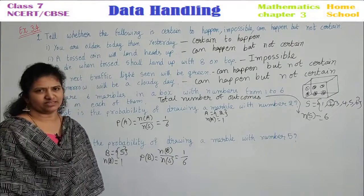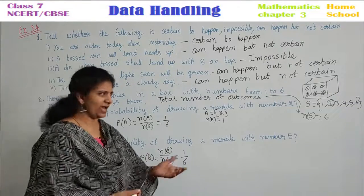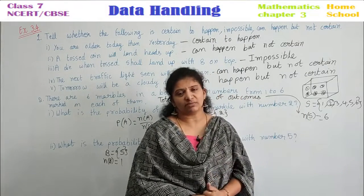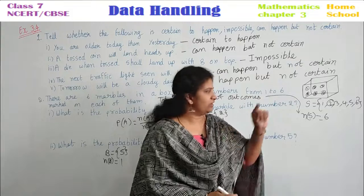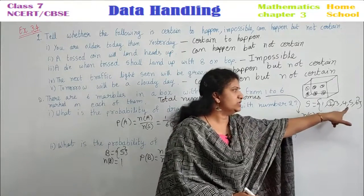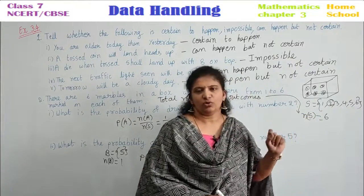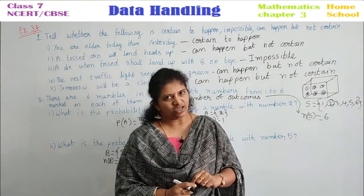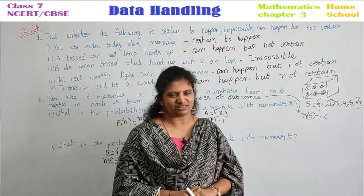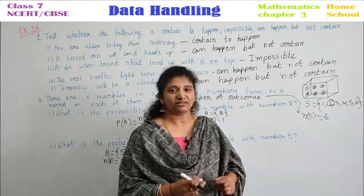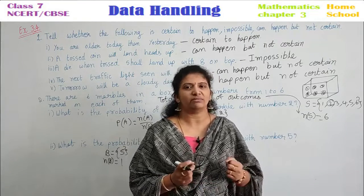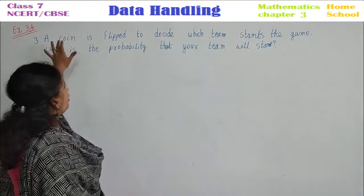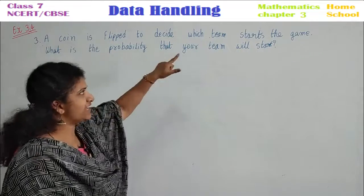How many even-number marbles are present? Even numbers — look here: one, two, three, four, five, six. The even numbers are two, four, six. Write it as C equals two, four, six. N of C equals three. So probability equals three by six. Like this, you will be able to answer any question.